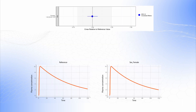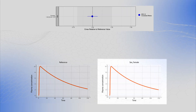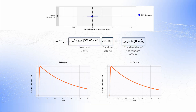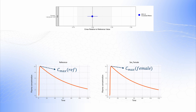Let's focus for a moment on the effect of sex. Here is how a PK profile of a typical reference individual — a male subject — looks like, and here is how a PK profile of a typical female subject looks like. By typical, we mean that the random effects have been set to zero, such that the individual parameters include the population value and covariate effects. We can compare the Cmax values of these two profiles and see their ratio plotted on the forest plot as a blue circle.